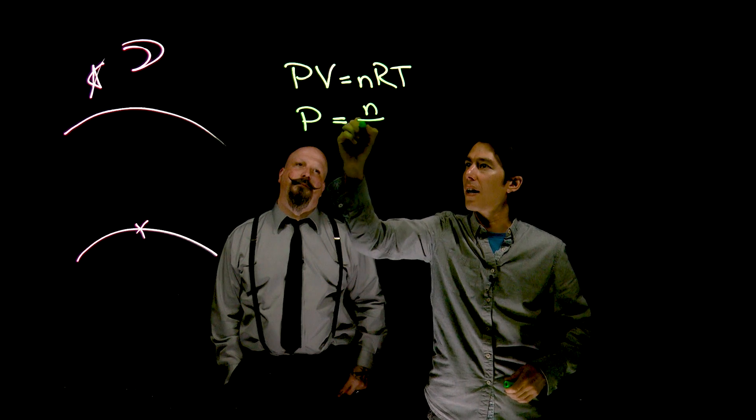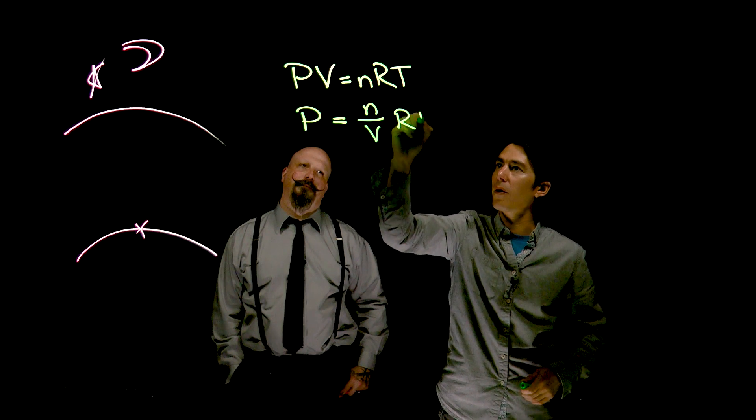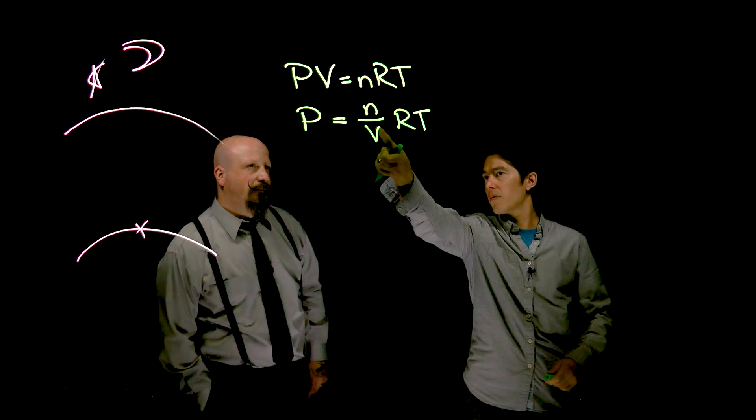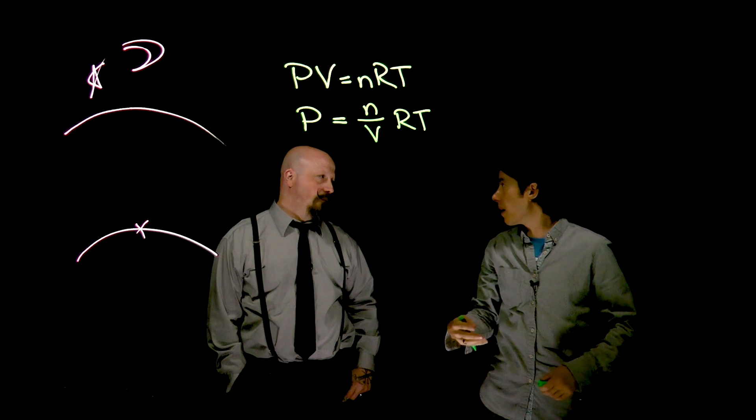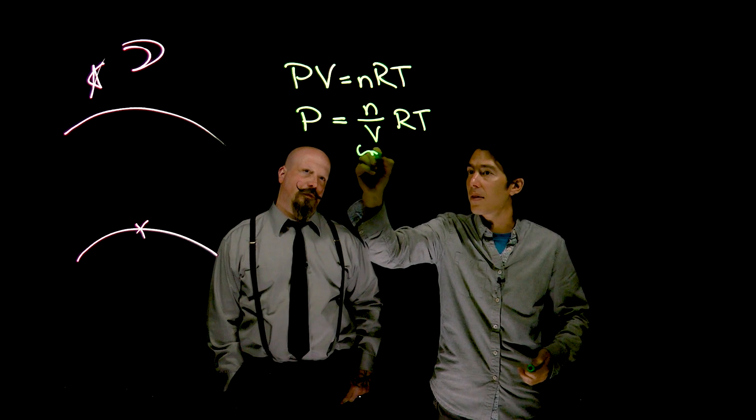We've got P, we've got n over V, n, R, and T. And what you notice is, well, number of particles divided by the volume. That's essentially, it's a density. Right.